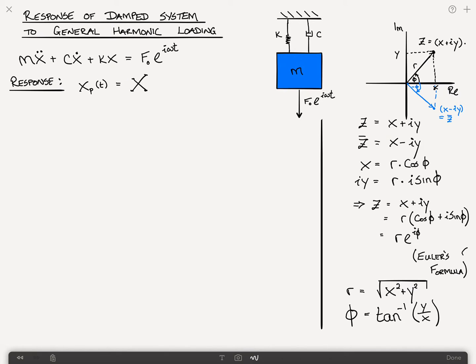The x sub p of t, the particular response, or steady state response, can be written as capital X times e to the i omega t. So what have we done? We've assumed that since it's a harmonic loading, we're going to assume a harmonic response of the form of x times e to the i omega t. And we proceed like we've seen in previous videos, where we take the derivative, the first derivative, x dot p of t, is equal to i omega X e to the i omega t. That will be equation three.